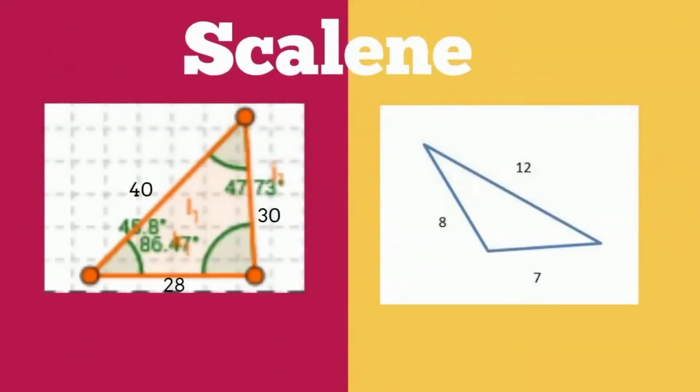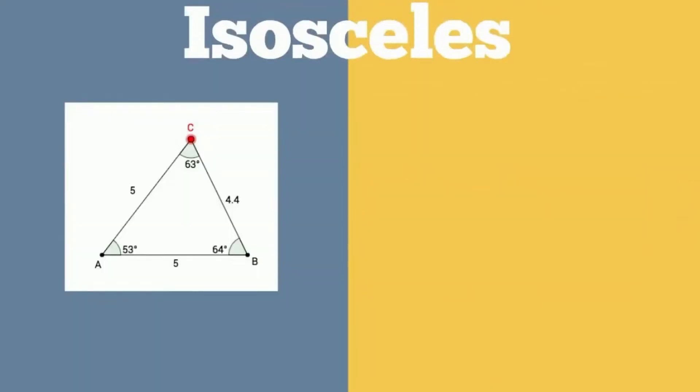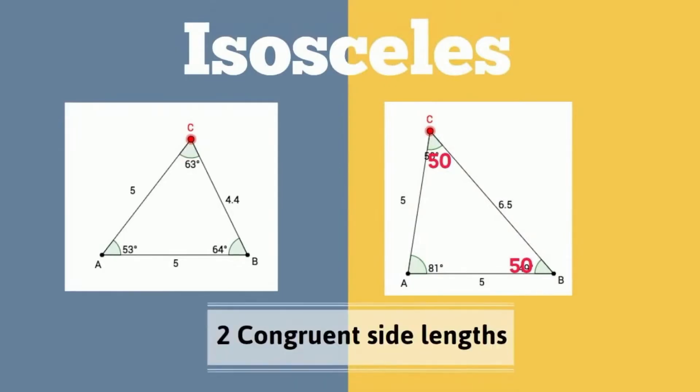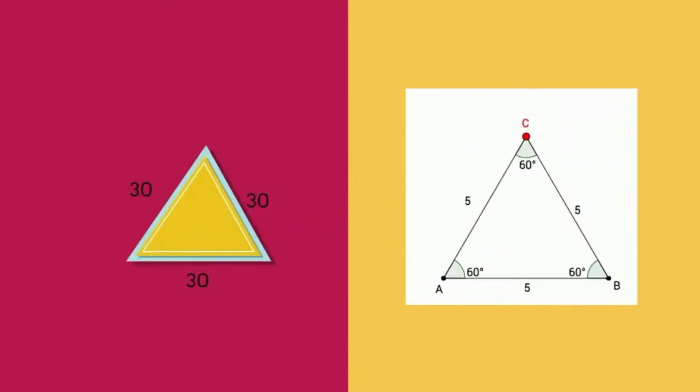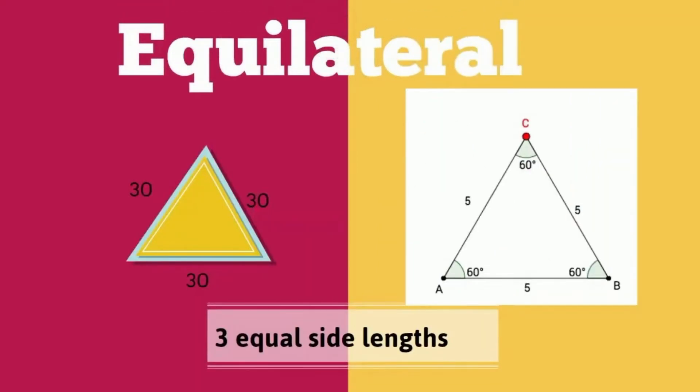A scalene triangle has three different side lengths, therefore you have three different angle measures. An isosceles triangle has two congruent sides, or equal sides, and therefore you have at least two congruent angles. An equilateral triangle has three equal sides, and the angle measure equals 60 degrees.